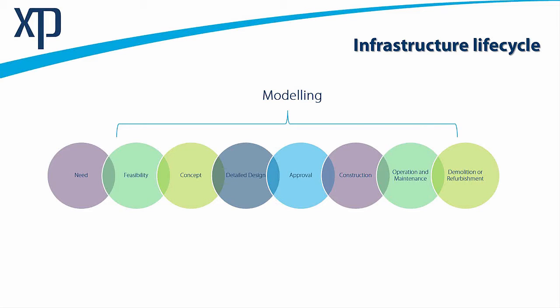I'd like to start with the infrastructure life cycle. No matter what type of infrastructure it is — an open channel, a pipe, a pond — everything comes from a need. Before we create any stormwater infrastructure, we need to have a need, whether that's a new road, a new development, or anything else which triggers a requirement for stormwater infrastructure. Once we have a need, the first stage would be feasibility — understanding how feasible it is to build what we need. It's perhaps cool to have an underwater town, but it's not very feasible.